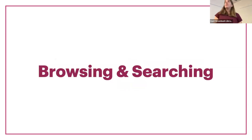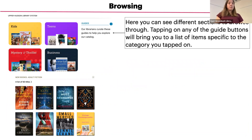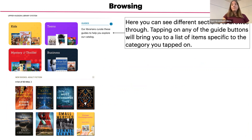Next, we're going to talk about browsing and searching for an item. There are several ways you can browse for or find content on the Libby app. If you don't have a specific author or title in mind, you can browse the collection in a couple of ways.